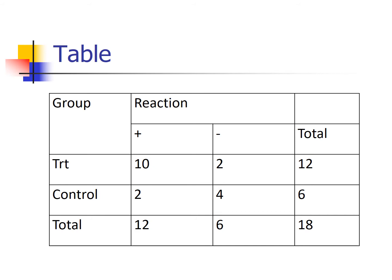I can calculate that expected cell count. The expected cell count for the control group that had a negative reaction is six times six divided by 18, which equals two. So we're out of luck — we have an expected cell count less than five, which means the chi-squared approximations our previous tests rely upon are not satisfied.